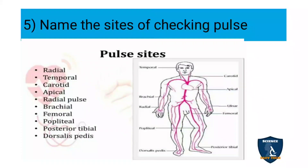The fifth question: name the sites of checking pulse. There are many pulse sites: radial, temporal, carotid, apical, brachial, femoral, popliteal, posterior tibial, and dorsal pedis. These are the various sites of checking pulse.